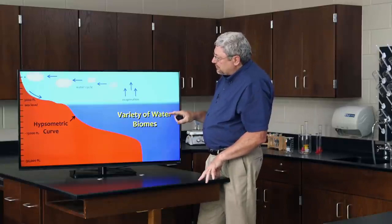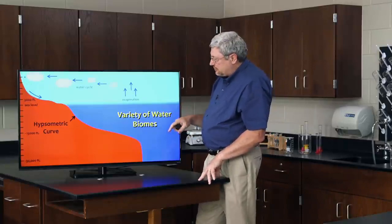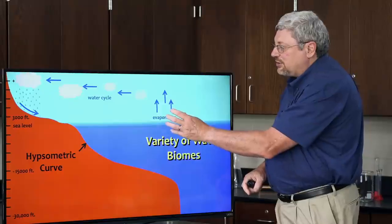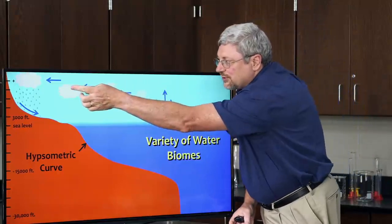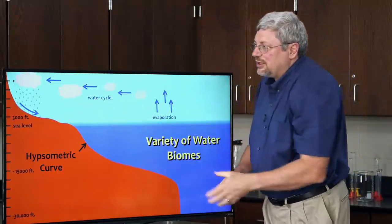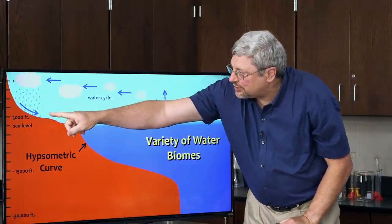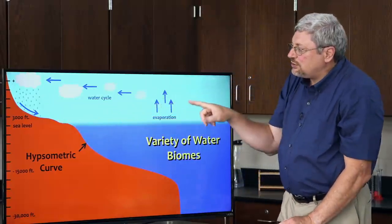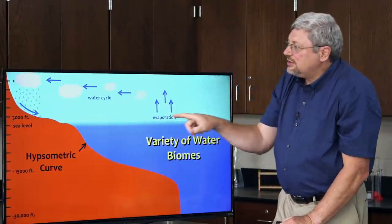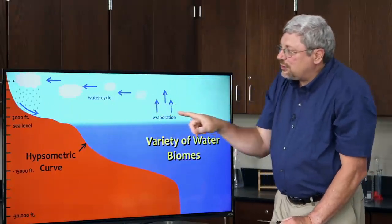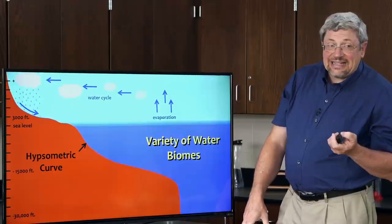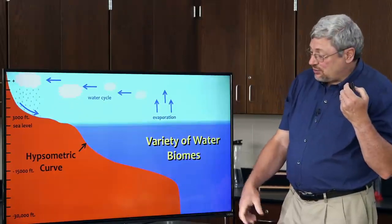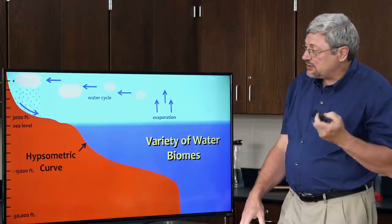If you superimpose upon this the water cycle, the fact that evaporation occurs off of the water into clouds, which move over the land, which drop the water onto the land, precipitating onto the land, and the water flows back into the ocean, creating this cycle that is continuously ongoing, then we can see why it is that there are different water biomes on the earth.